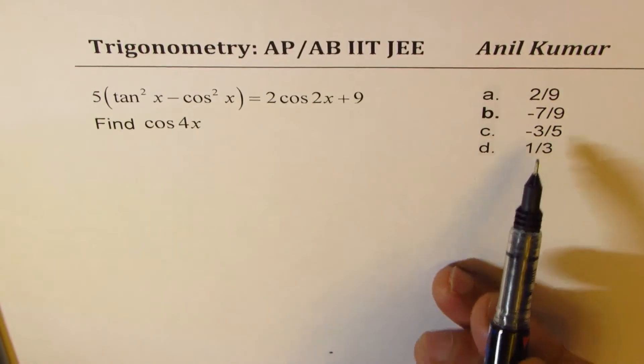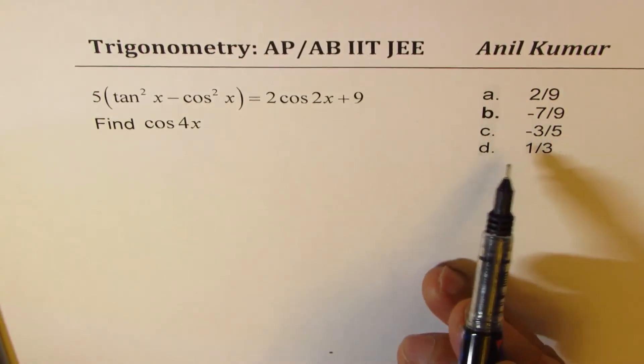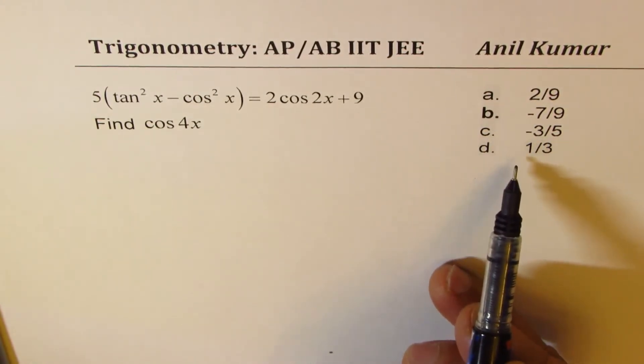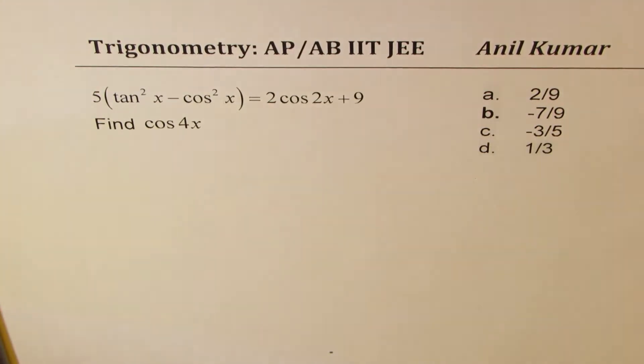Four choices are given to you: 2 by 9, minus 7 over 9, minus 3 over 5, and 1 over 3. You can pause the video, answer the question, and then look into my suggestions.